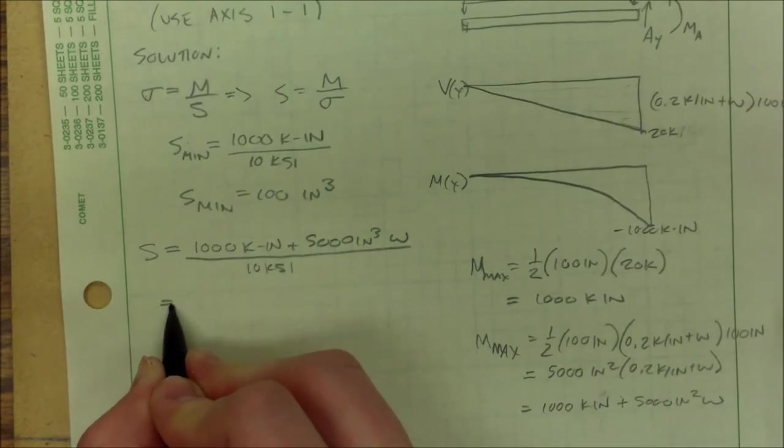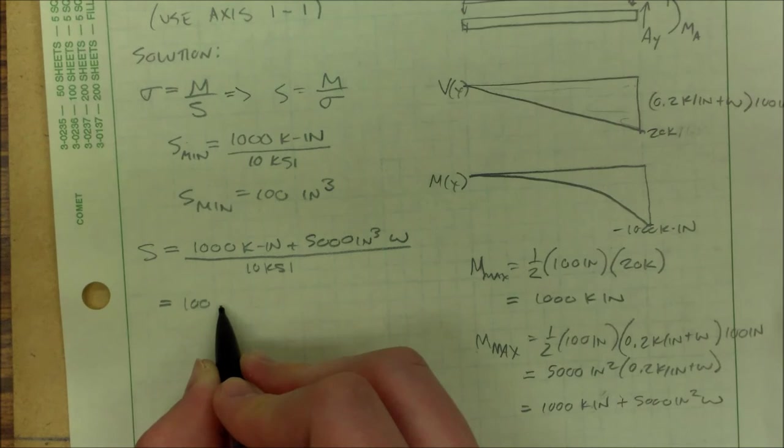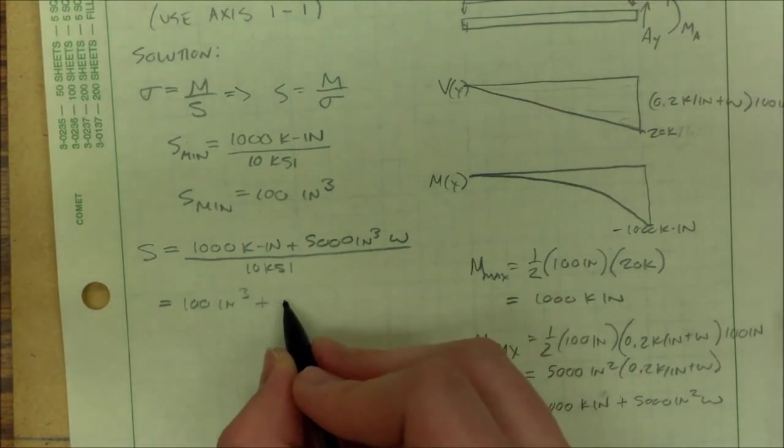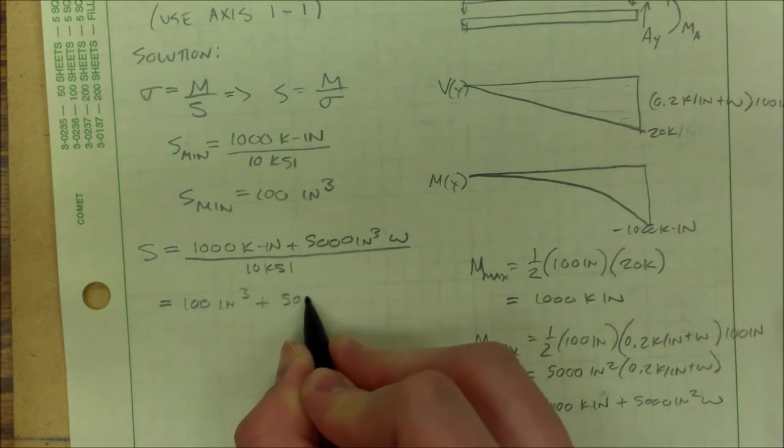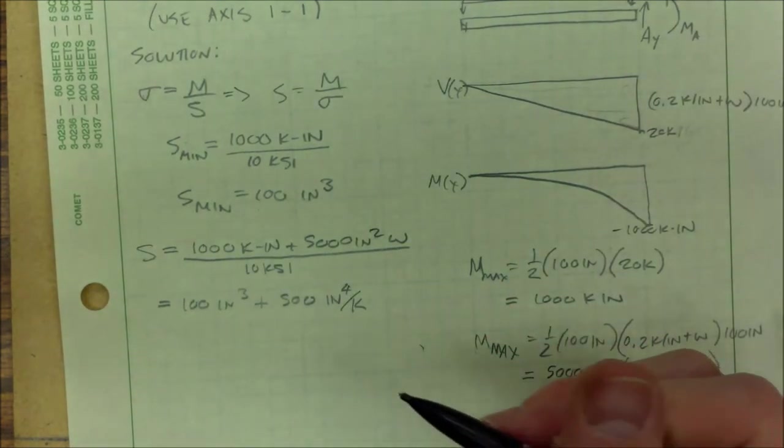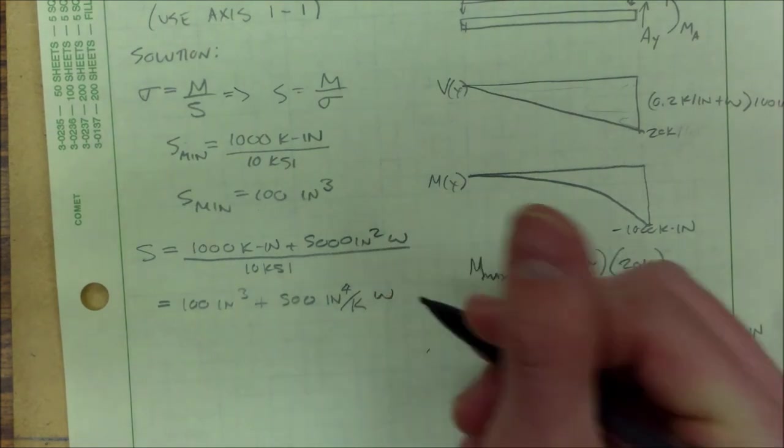And this gives us 100 inches cubed plus, what's that, 500 inches to the fourth divided by k. This is w.